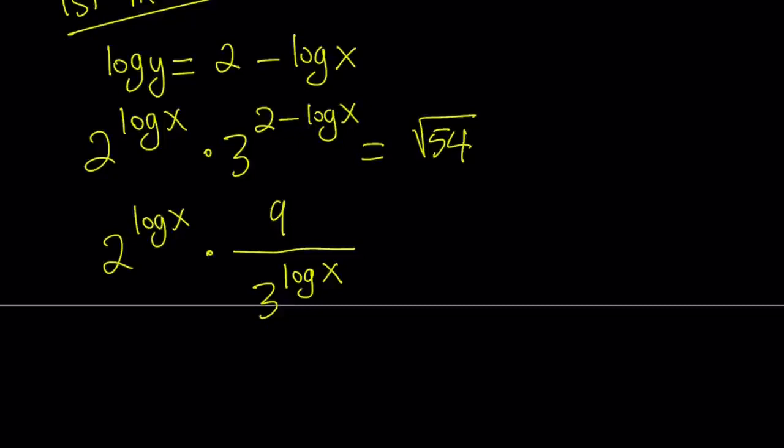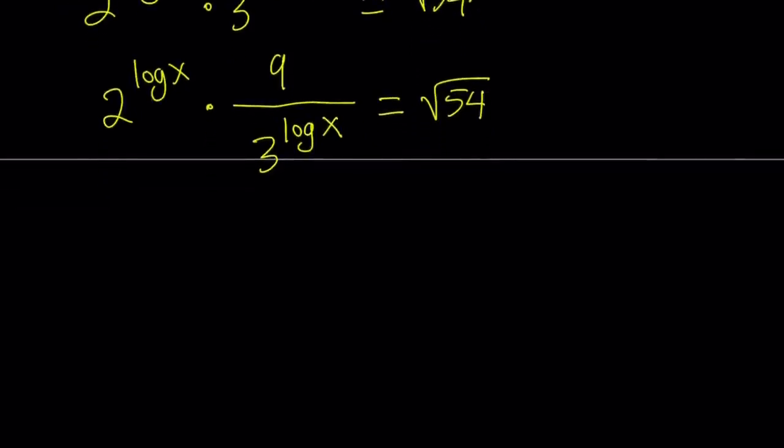Now, what about the right hand side? Let's just write it as square root of 54 for now. Notice that here we have 2 to the power log x divided by 3 to the power log x. So those two expressions have the same exponent, therefore we can just write them together like this, 2 over 3 to the power log x. So we can write them with the same exponent and we can just divide the bases.